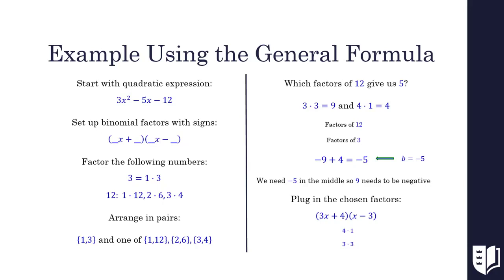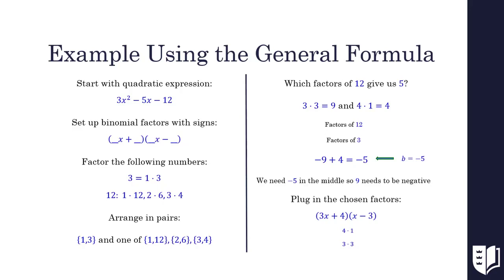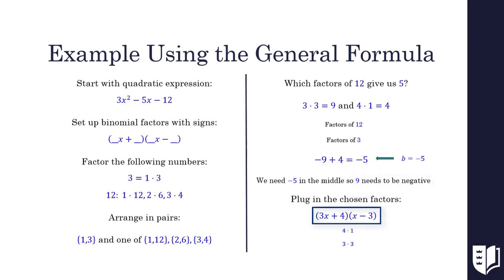In order to choose the correct pair of factors for 12, we need to see which pair gives us a 5 when multiplied with our factors of 3. We should always start with our closest factors and work out. This means we need to multiply 1 and 3 by 4 and 3. If we multiply 3 by 3, we get 9. And if we multiply 4 and 1, we get 4. 9 and 4 have a difference of 5, so we know these are going to be our factors. Now we need to decide where our factors go in our binomials. In order to get a negative 5 to match our middle term, we need our larger factor of 9 to be negative and our smaller factor, 4, to be positive. This gives us the binomial factors 3x plus 4 times x minus 3.